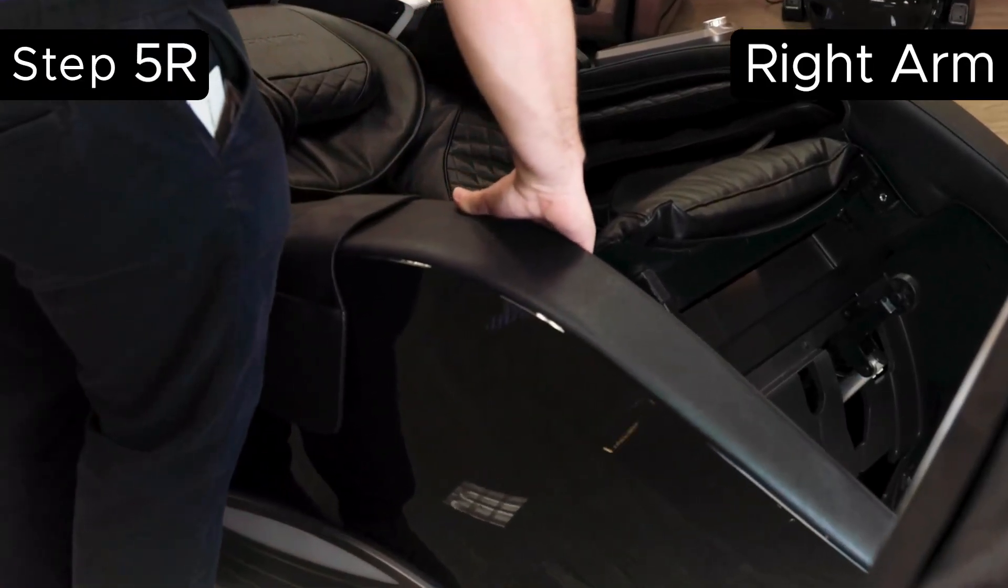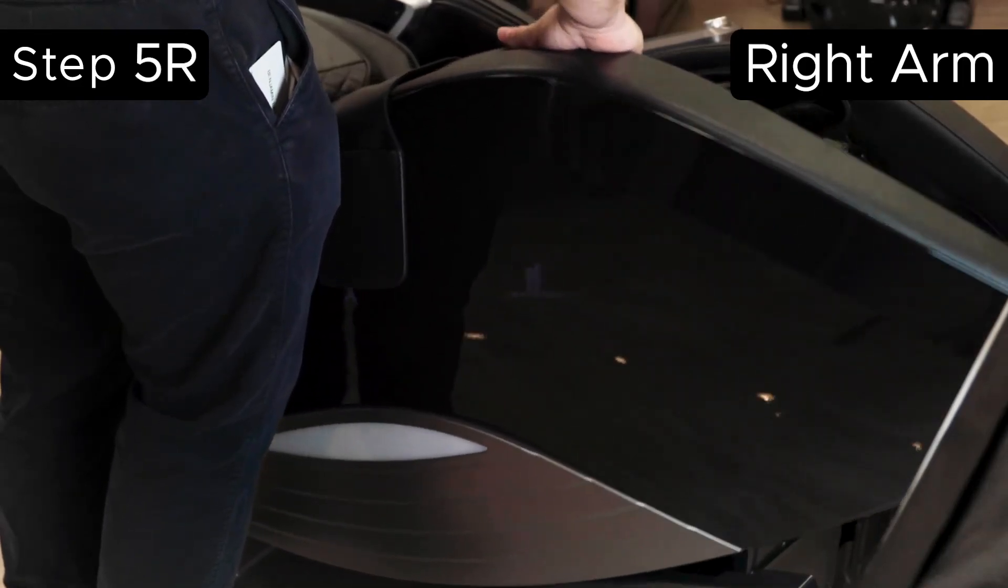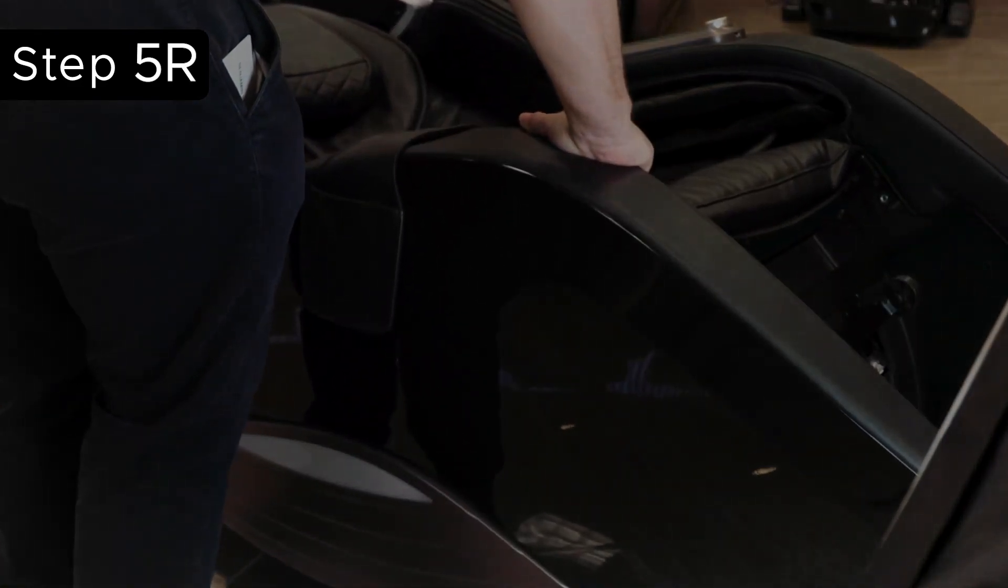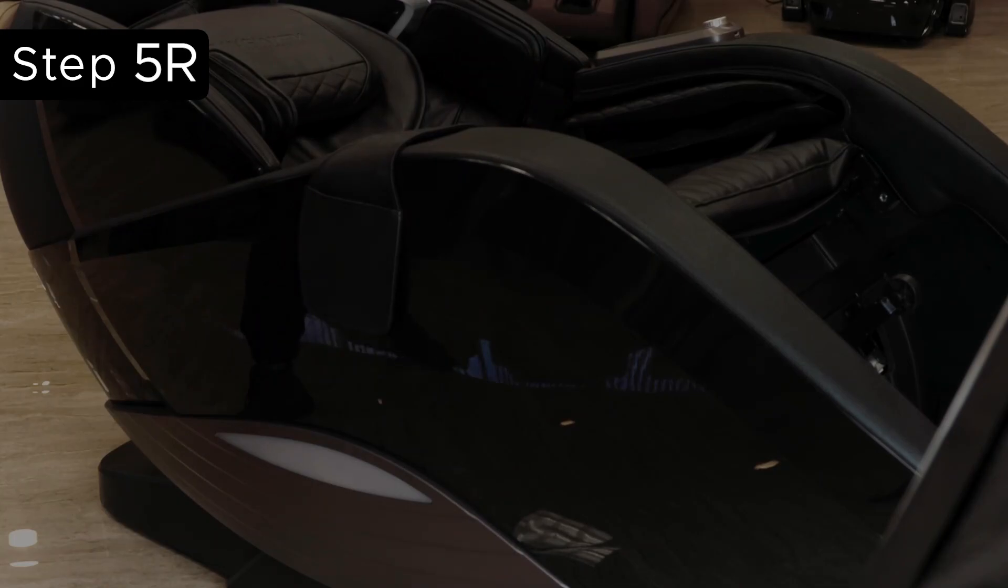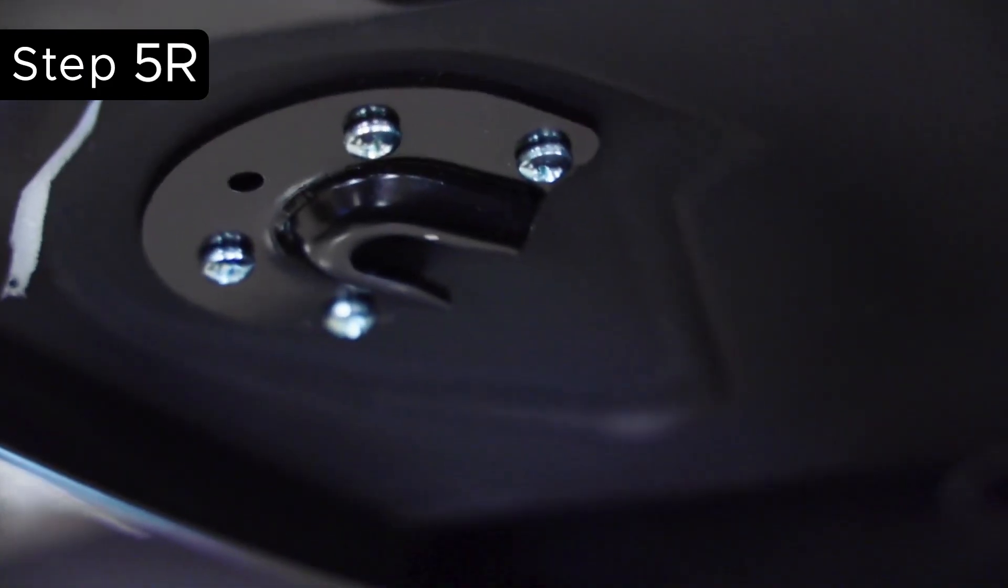Here I'm repeating the same process on the right side of the chair as I did on the left side of the chair, hooking the arm over the bar that's on the body of the chair, lining up the screw holes and making sure that the hook towards the back of the arm is sliding properly and tightly into place. You can easily tell if these spots are aligned properly. By looking towards the back of the arm, if there's any space between the arm and the body of the chair, you may need to realign the arm and slide it back on so that the hook is inserted properly.